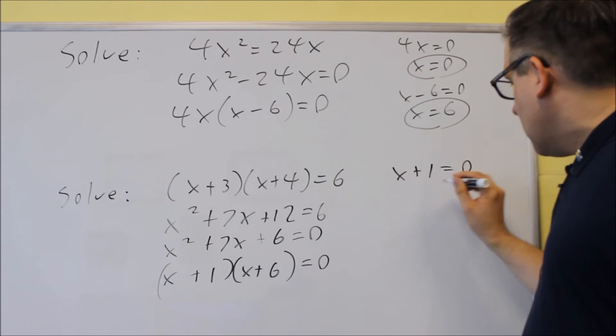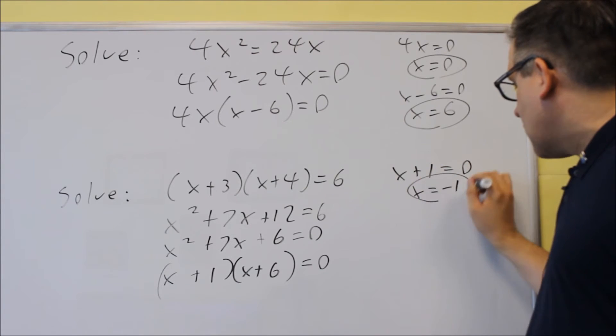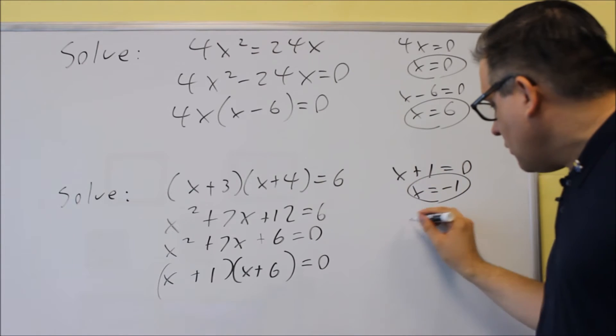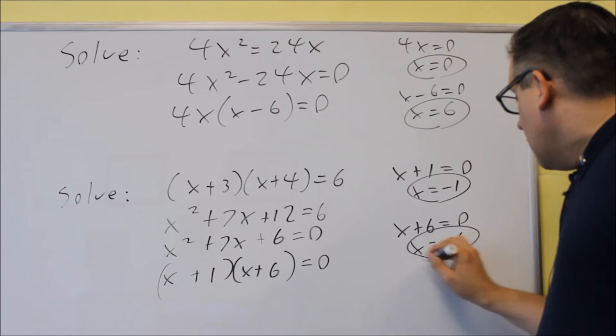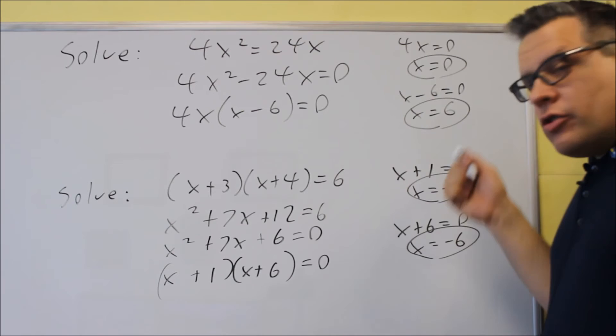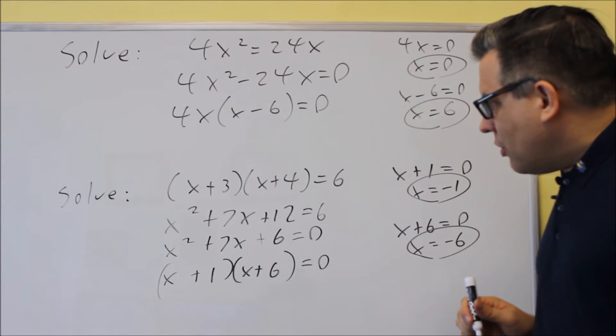You get x plus one equals zero, and so you'll get x is equal to negative one. And then you have x plus six equals zero, and you're going to get x is equal to negative six. Those right there would be the correct answer.